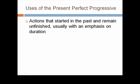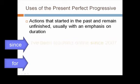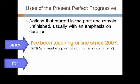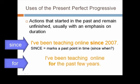The main use of the present perfect progressive is to refer to actions that started in the past and remain unfinished, now at the present, and there's usually an emphasis on duration. For that reason, you'll see this verb tense used with the adverbs since and for. For example, I've been teaching online since 2007. Since marks a past point in time. I can also say I've been teaching online for the past few years. For expresses duration, a measurement of time.